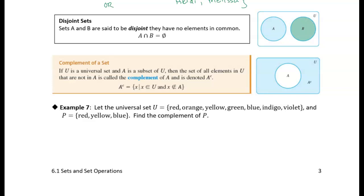All right, so let's talk about what it means to be disjoint. Two sets are disjoint if they have no elements in common.